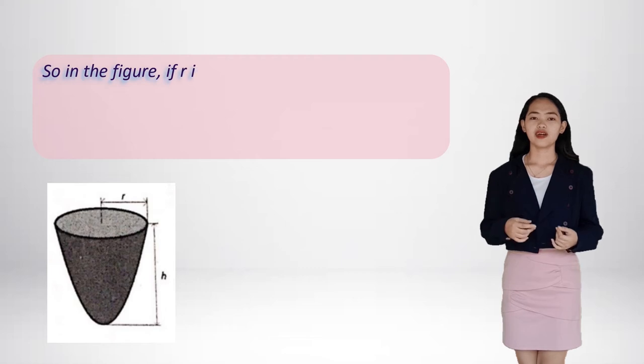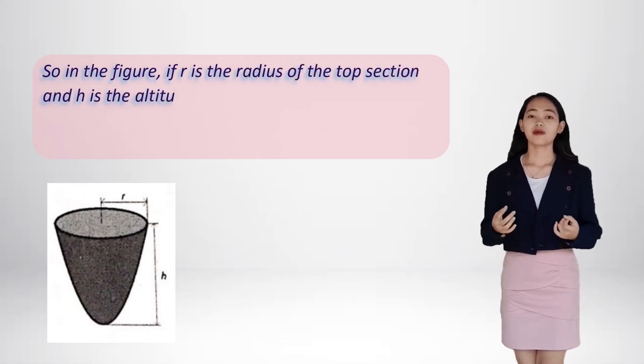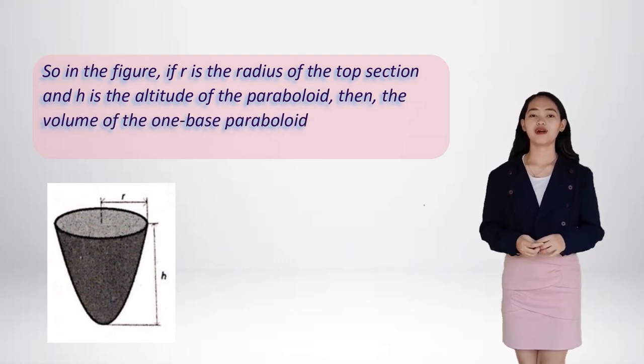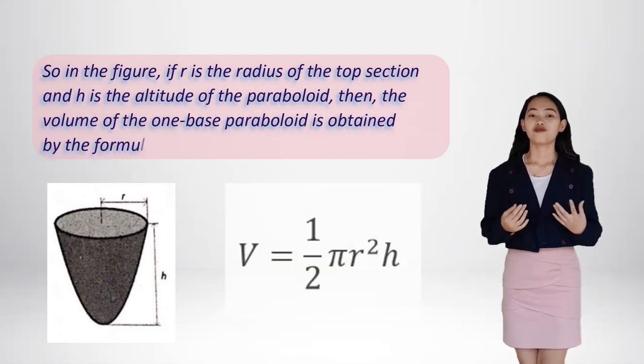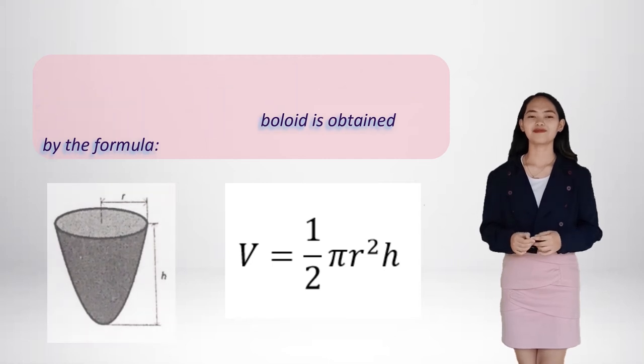So in the figure, if r is the radius of the top section and h is the altitude of the paraboloid, then the volume of the one-base paraboloid is obtained by the formula V is equals to one-half pi r squared times h.